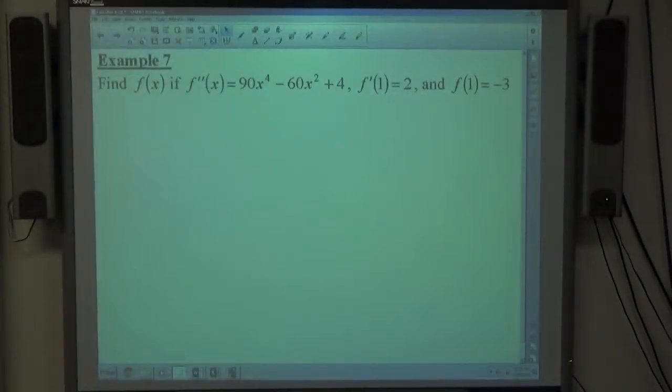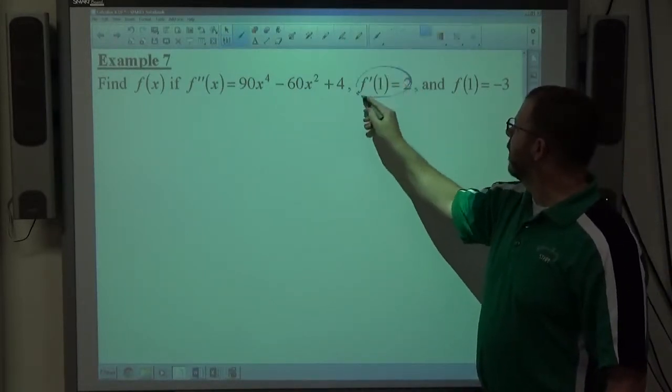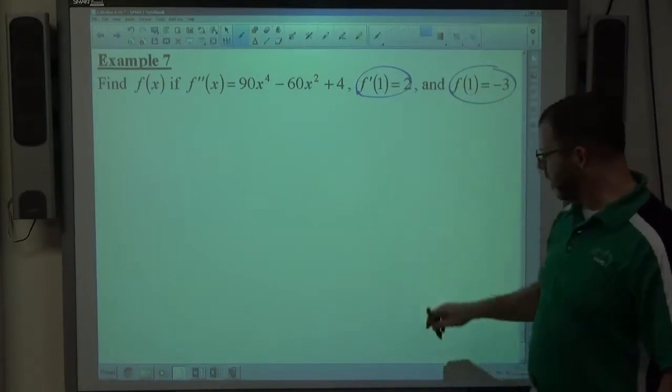All right, moving on to example 7. Find f(x) if f''(x) = 90x^4 - 60x^2 + 4. Notice they tell me f'(1) = 2 and f(1) = -3.